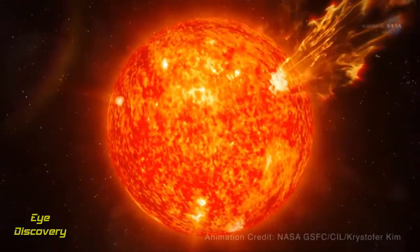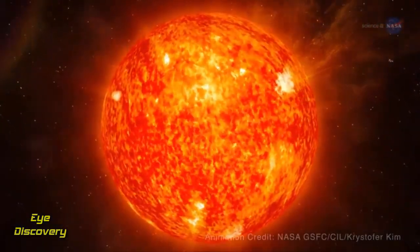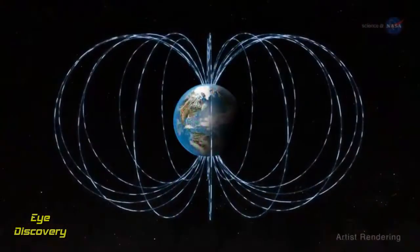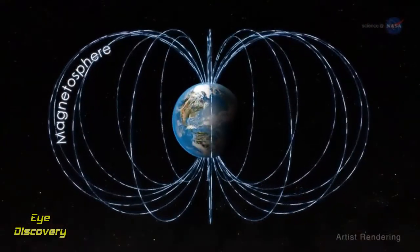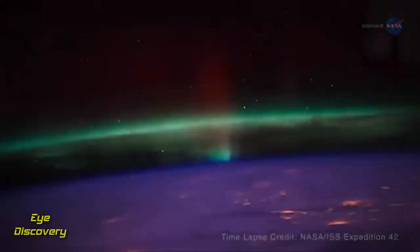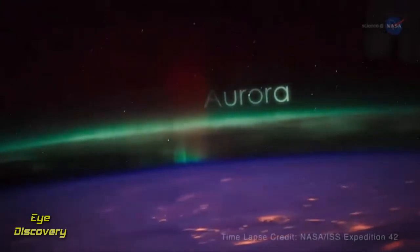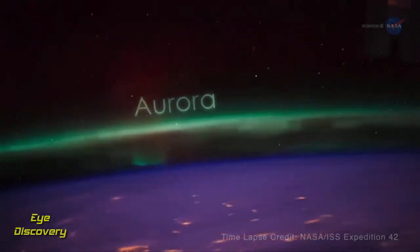While many theories describe the solar wind's history, this is what we do know. The solar wind impacting Earth's magnetosphere is responsible for triggering those majestic auroras, typically seen at locations close to our north and south poles.